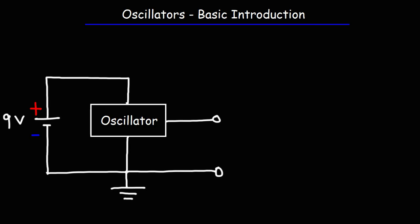In this video we're going to talk about oscillators. An oscillator is basically a circuit that takes in a DC input and converts it into an AC output. The output can be of a sinusoidal nature — you can get a sine wave, also known as a harmonic oscillator — or you could get non-sinusoidal outputs, which would be classified as a relaxation oscillator.